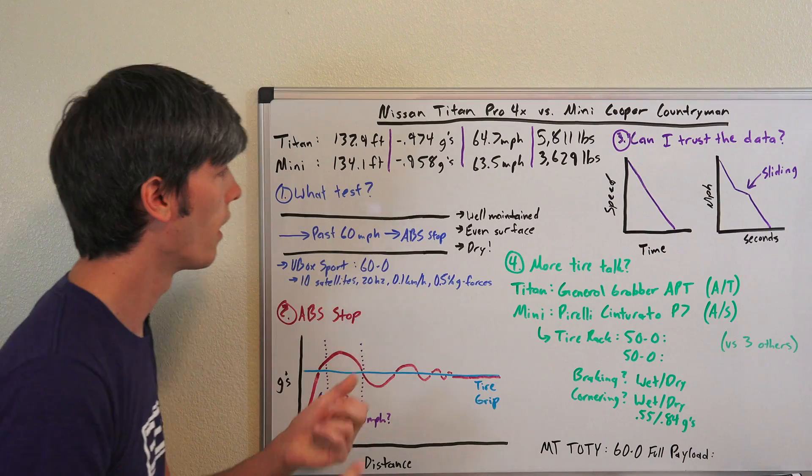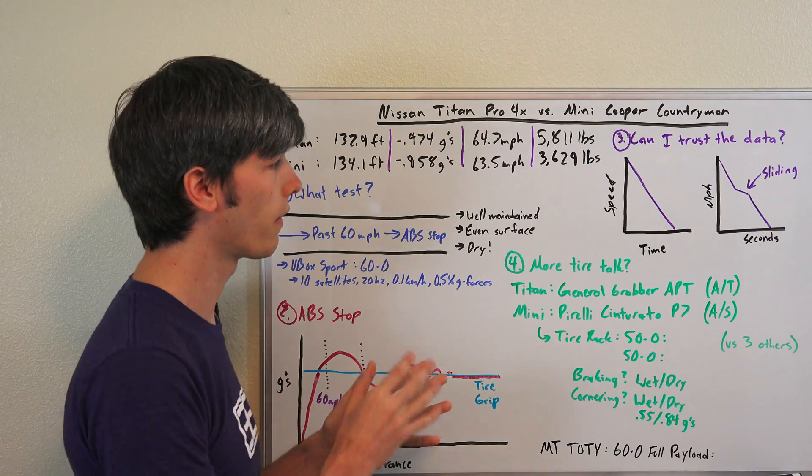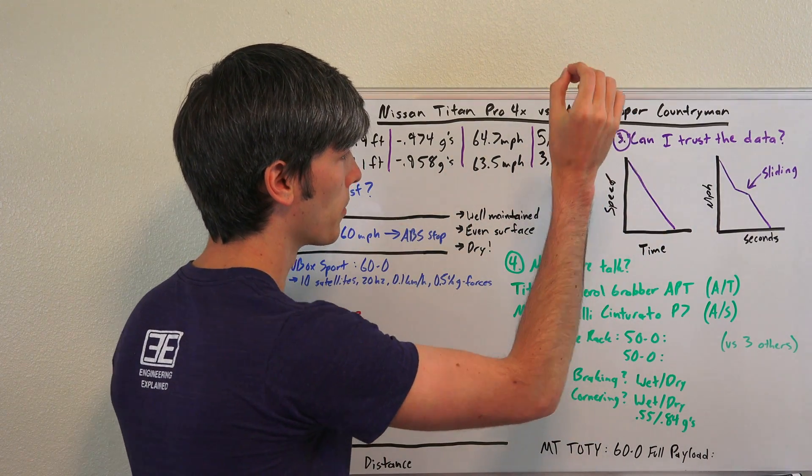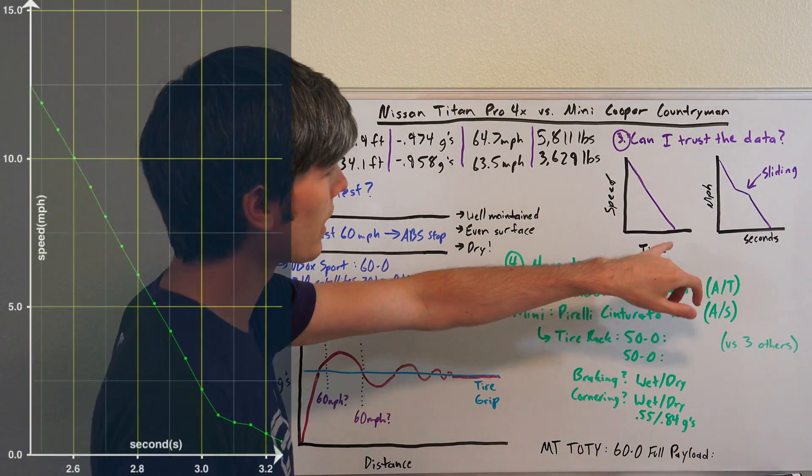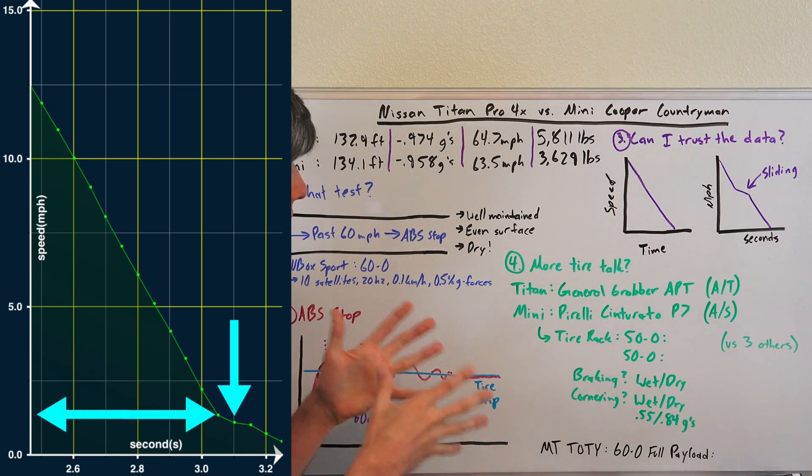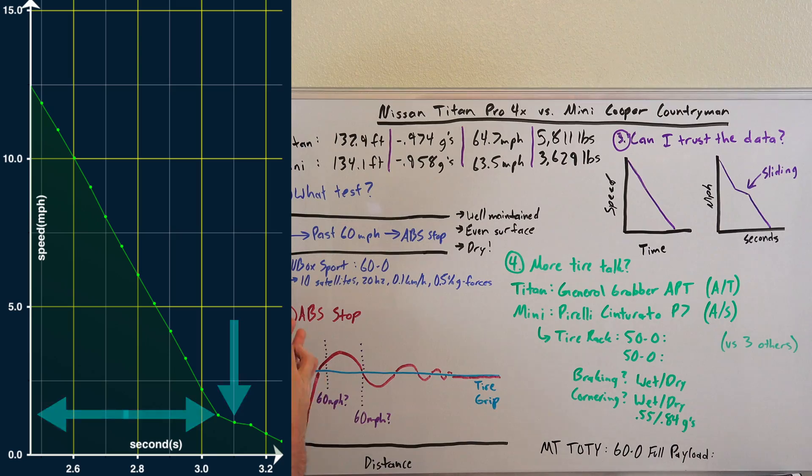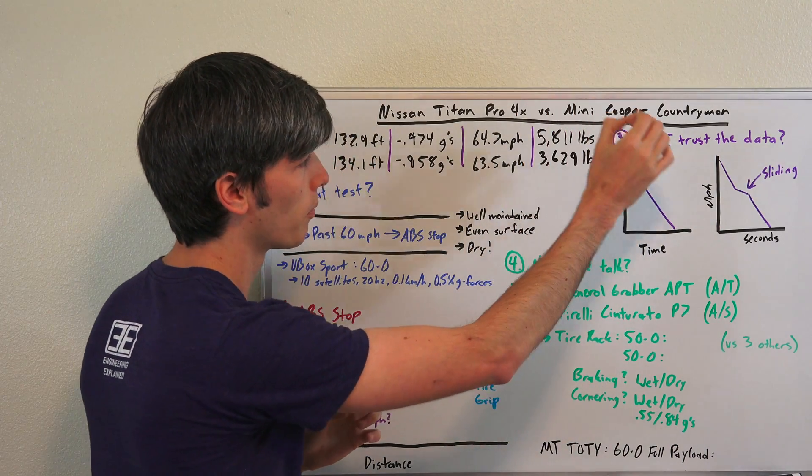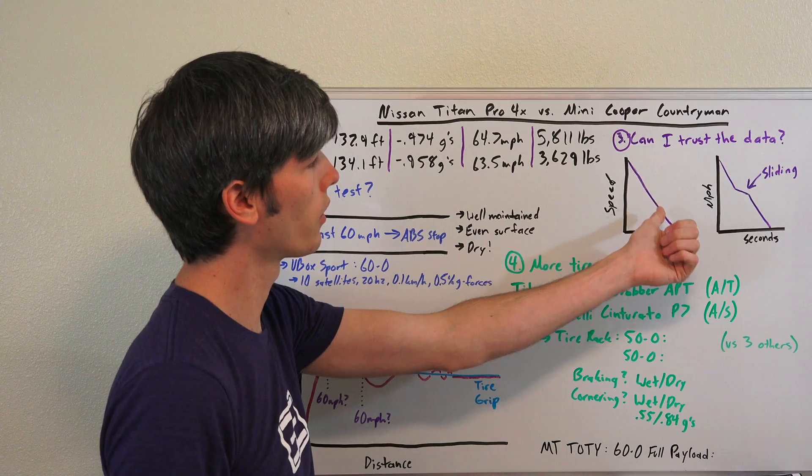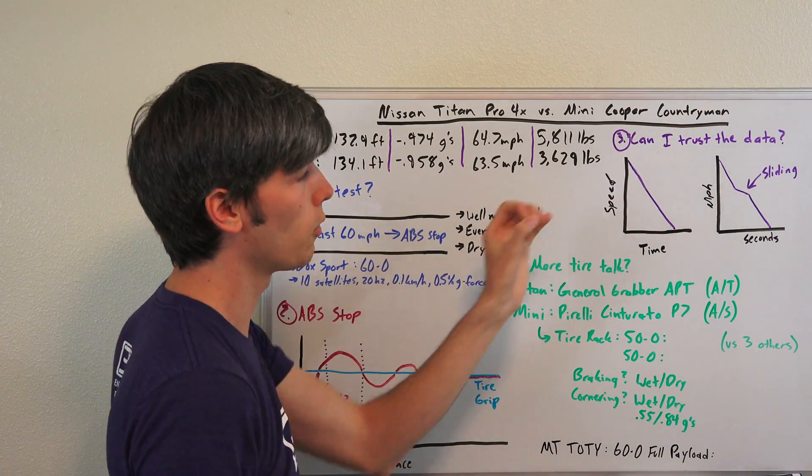Can we trust the data of the two stopping distances, the 134 for the Mini and 132.9 for the Nissan Titan? If you look at a graph of the speed versus time data for both of these vehicles, what you want to see is a nice linear progression from 60 miles per hour down to zero. What you want to see is from about 60 down to 5 miles per hour a perfect linear curve there, and that lets you know there really wasn't much slipping going on.